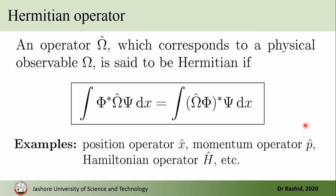Examples of Hermitian operators include the position operator, momentum operator, kinetic energy operator, Hamiltonian operator, etc. In fact, all operators in quantum mechanics that correspond to physical observables are Hermitian.